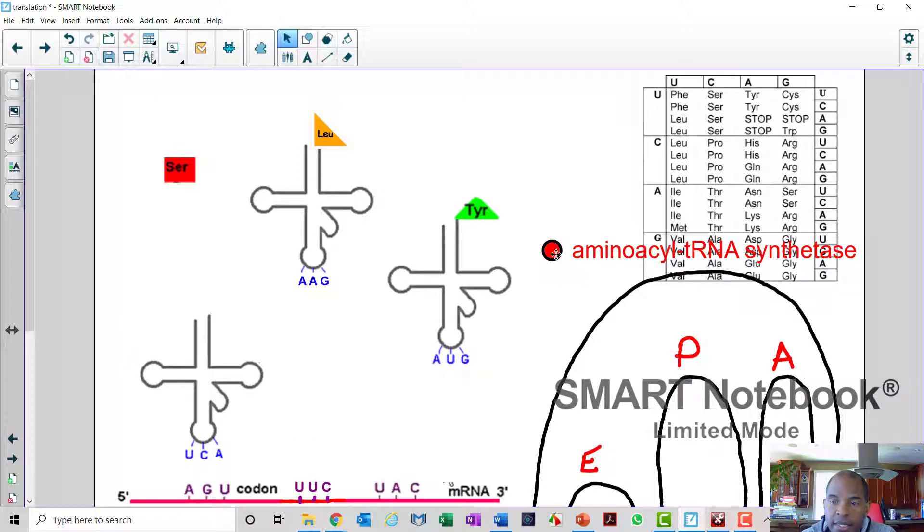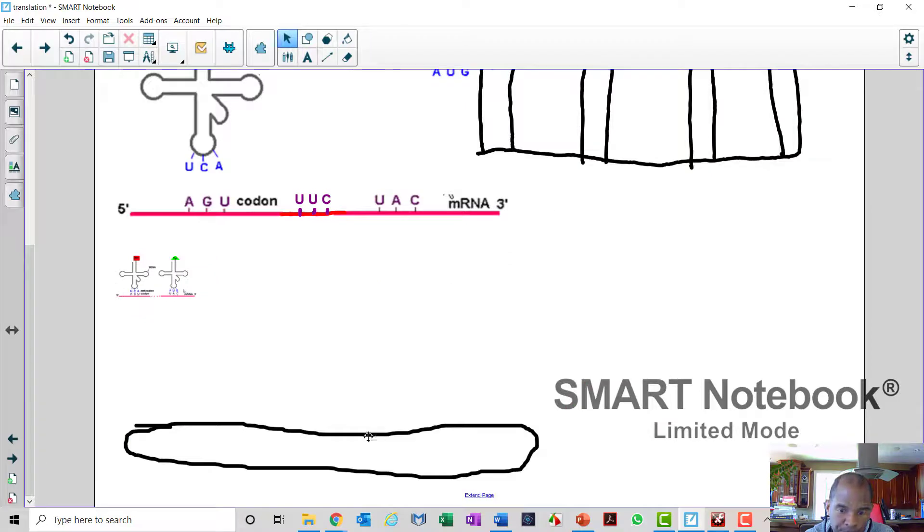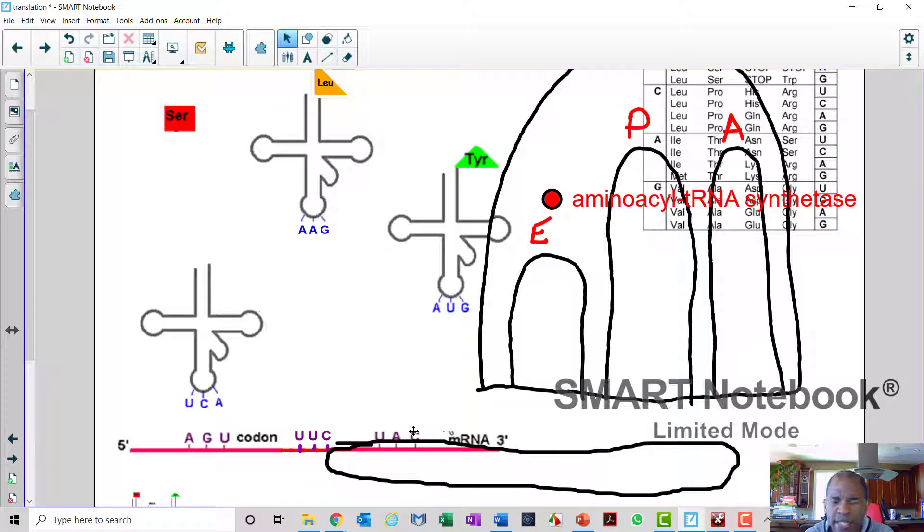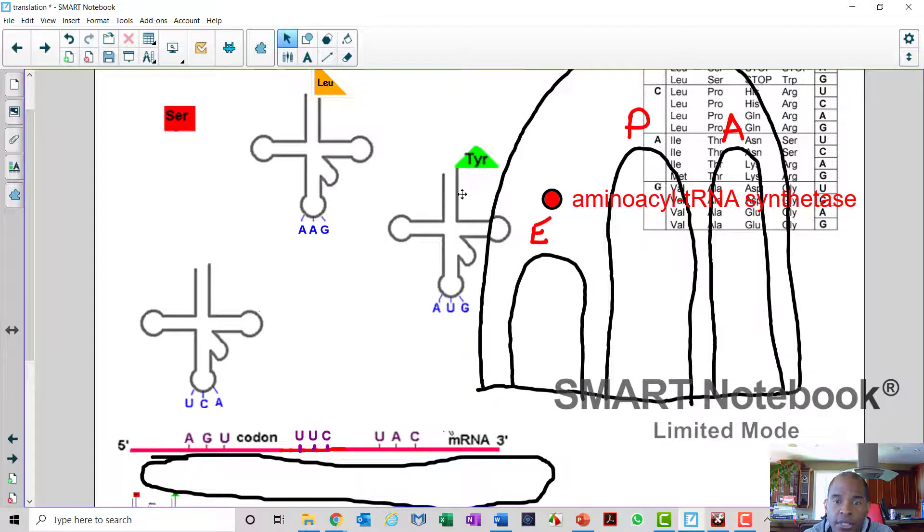Now, the ribosome. The ribosome has two parts. It has a small subunit and a large subunit. Here's a small, here's a large. And depending on the organism that we're talking about, they have different names. But what is called small and large? The small subunit is below the mRNA. And the large subunit goes above.